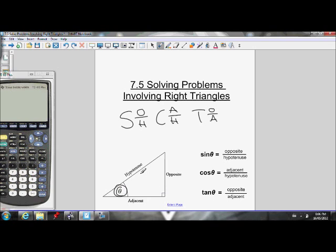Hypotenuse is always across from the right angle. Opposite always goes across from the reference angle. There's our opposite side. Adjacent, right beside our reference angle, right here. Hopefully we can label the triangle properly.